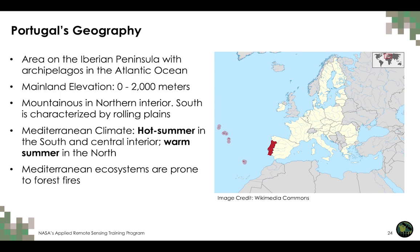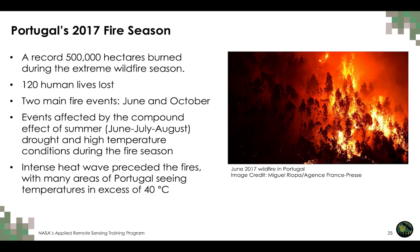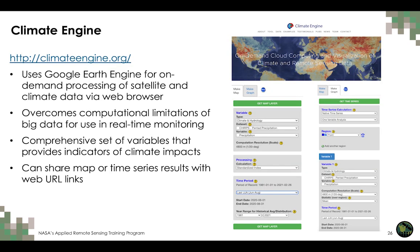Due to its climate and ecosystem, Portugal and the greater Mediterranean region are prone to forest fires. The 2017 fire season in Portugal set new records for area burned and lives lost: a total of 500,000 hectares burned, with 120 deaths attributed to wildfire. The two main fire events took place during June and October, as a compound effect of drought and high temperatures throughout the summer and fall fire season. An intense heat wave preceded the June fires, with many areas of Portugal seeing temperatures in excess of 40 degrees Celsius.